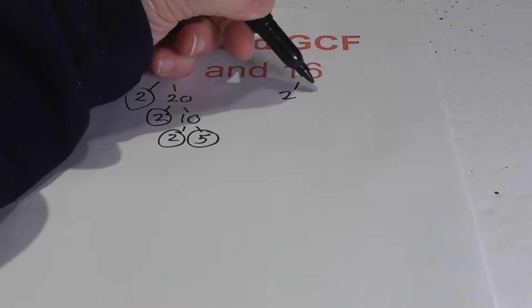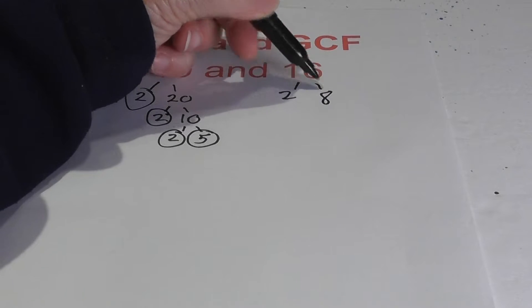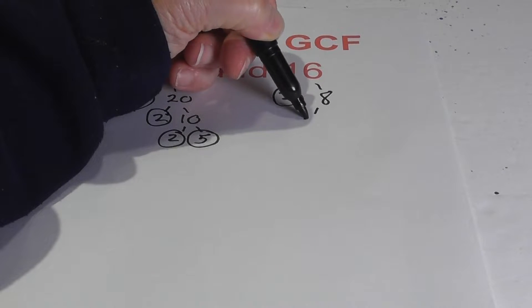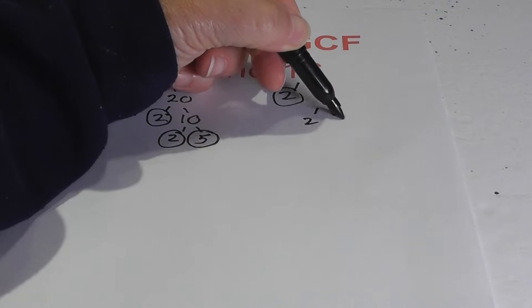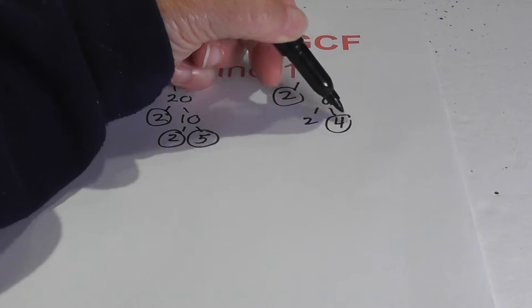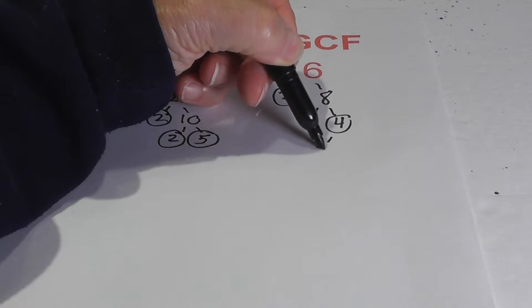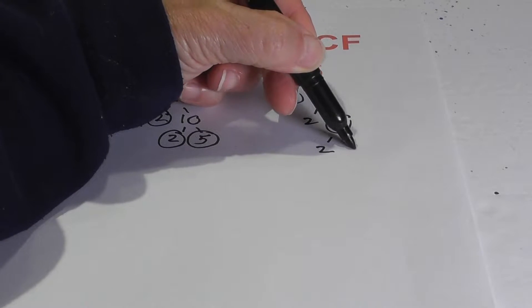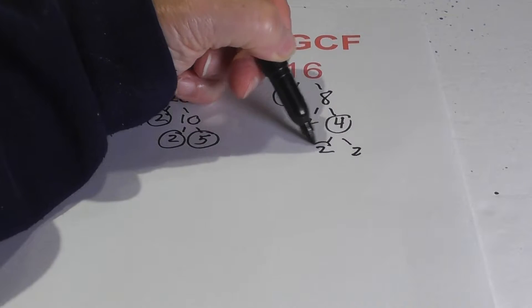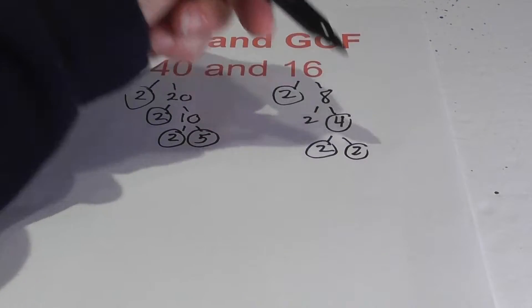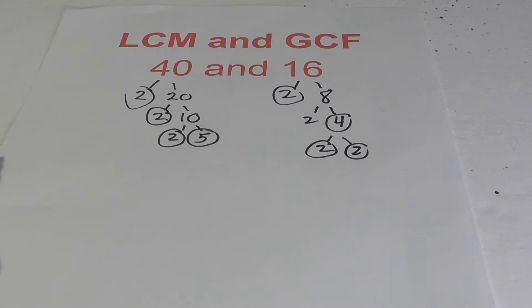16 is 2 times 8. Circle the 2, and then 2 times 4, and then 2 times 2. Kind of a messy 2 there.